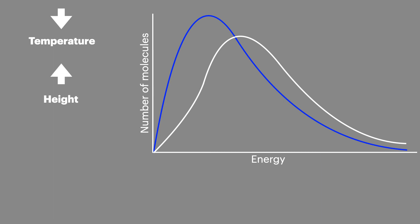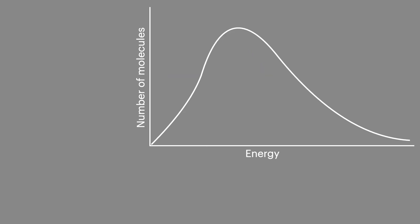The peak also becomes narrower and the new curve must only cross the old curve once.